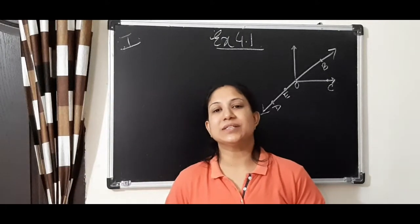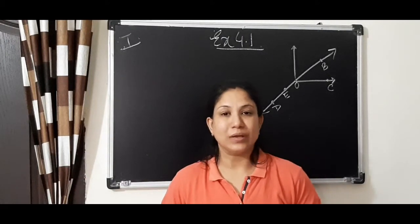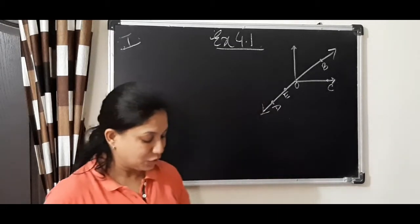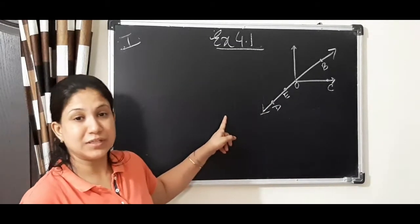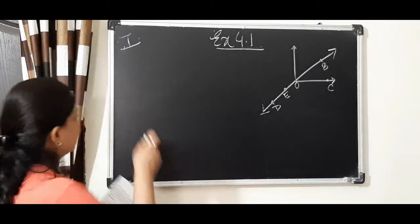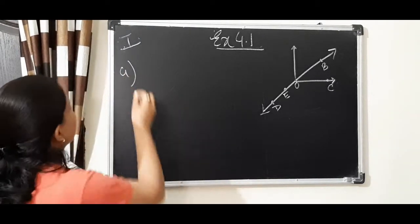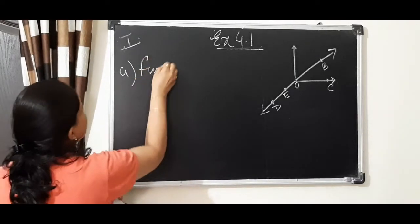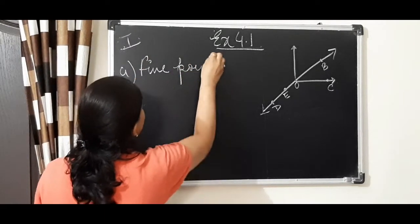Now we shall discuss Exercise 4.1. See the first question - use the figure to name. This type of figure is given in your book and they are asking first to find out and name the 5 points.